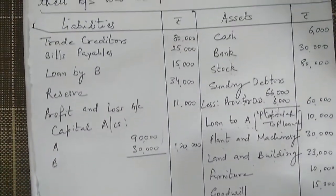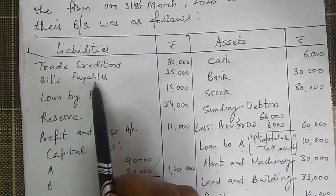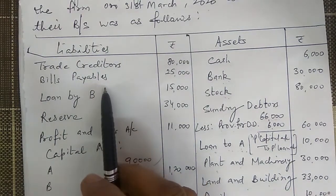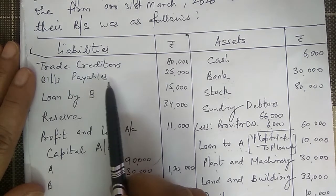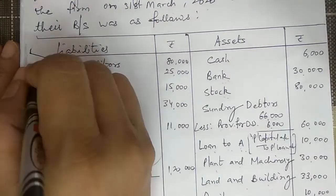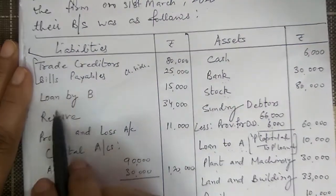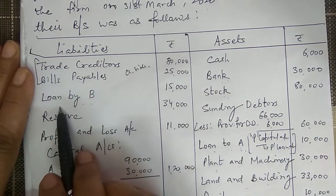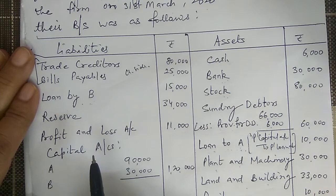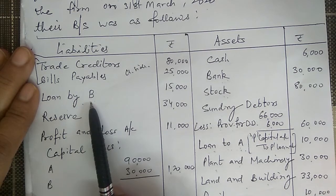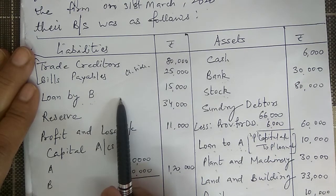Now the liabilities side. Trade creditors and bills payable are outsiders' liabilities — they are transferred to the credit side of the realization account at their full values. Loan by B is a loan given by B to the firm, so it is the firm's liability. For this, we create a separate partners' loan account — B's loan account. Since it is a liability that is currently standing, we write 'by balance brought down' on the credit side. When it is paid, we write 'to bank'.